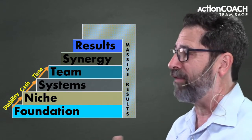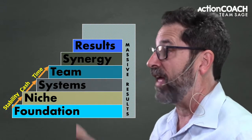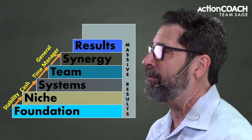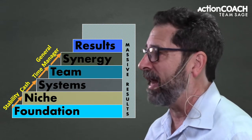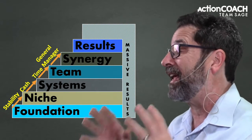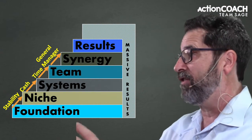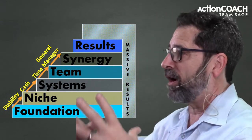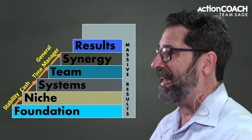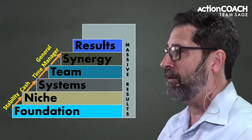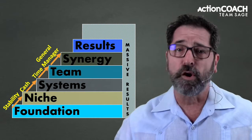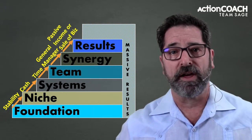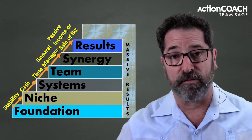That next level is team — where we focus on building a team that can run the business as well as, if not better than, we can. This takes our business into the growth stage. At the growth stage, we have a team running the business, systems making them efficient, marketing we can scale up, and a solid foundation — so we can turn up the volume and reach the final stage where we have the results we went into business for in the first place.